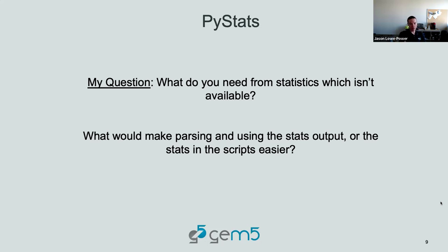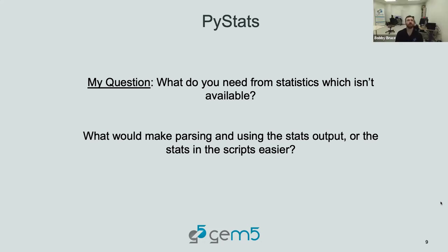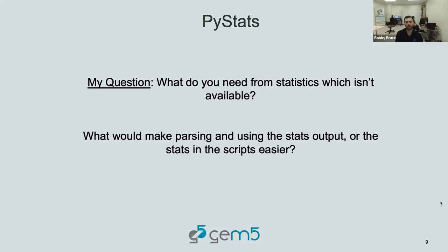My number one thing is I would love to have a single data structure or API such that I can access the stats when I'm running my GEM5 simulation and also after the fact — I would love to use the exact same code in the simulation and then for post-processing, rather than having a completely different set of code for post-processing stats. But I can't use this API outside of GEM5.